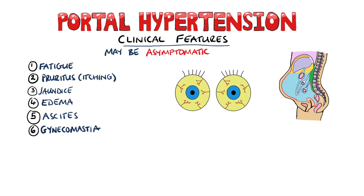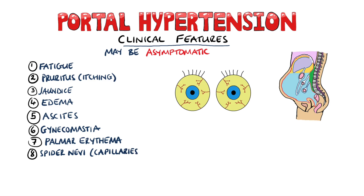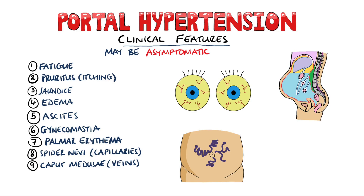Gynaecomastia may be seen in males, as the liver plays a role in balancing testosterone and oestrogen levels by sex hormone-binding globulin production. Palmar erythema occurs for a similar reason, as well as nitric oxide release. Spider naevi, a type of telangiectasia meaning swollen capillaries, and caput medusae, which are distended superficial epigastric veins that radiate from the umbilicus. Hepatosplenomegaly is another potential finding.